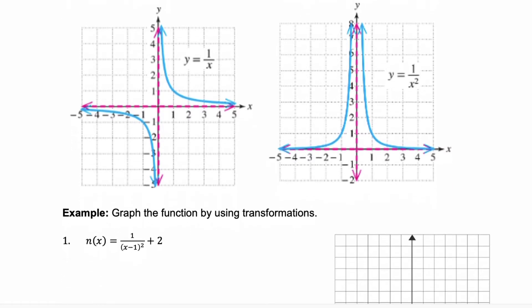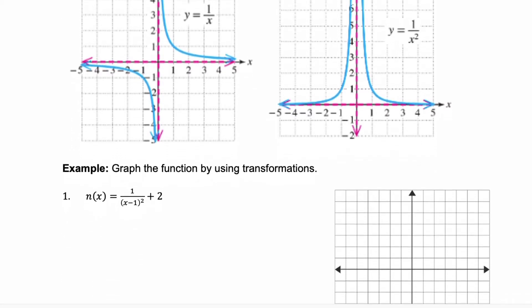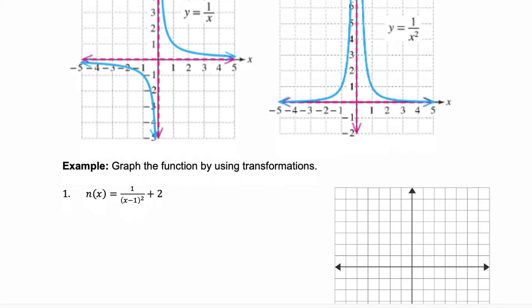In our first example, we're going to graph the function using transformations. Remember your order of transformations. First, we want to identify the mother function. We have a squared in the denominator, so the mother function is the reciprocal squared function, 1 over x squared. Now we want to go through the order of transformations.